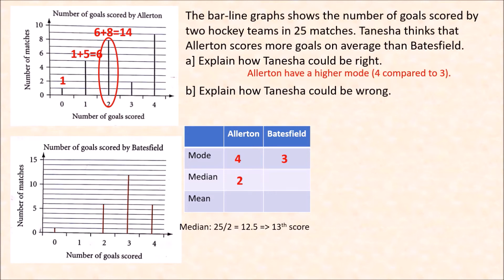For Batesville: there is no bar at 1 goal, so we take the second bar — 2 goals has 6 scores, giving us 7 data points so far. We want the 13th, so we go to the third bar, which has 12 scores — adding 7 plus 12 gives us up to the 19th data point. Since 13 falls within that bar, the median of Batesville is 3 goals.